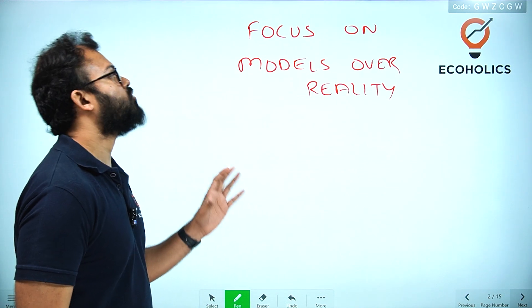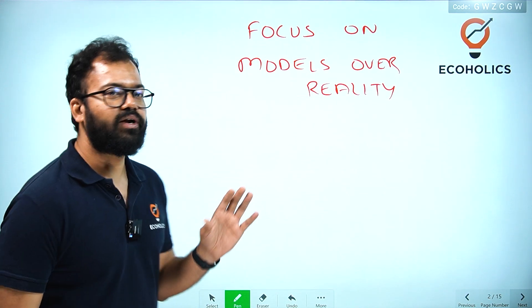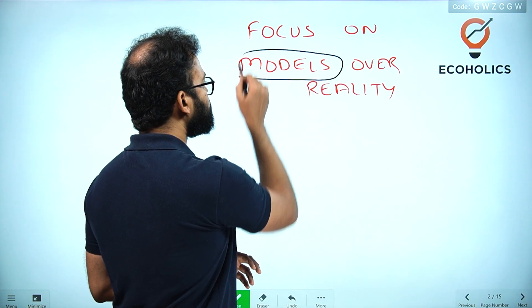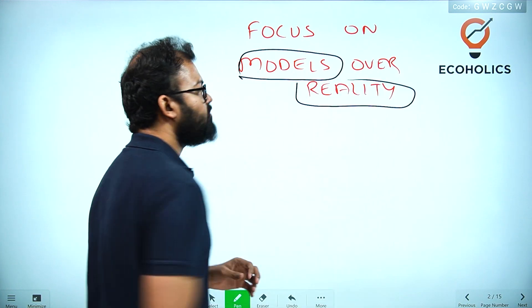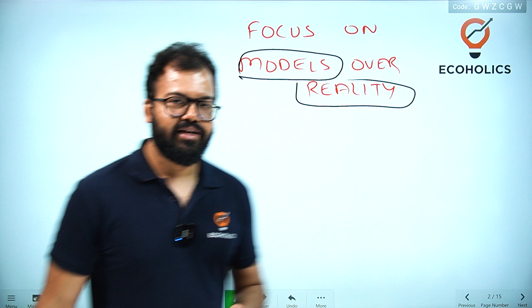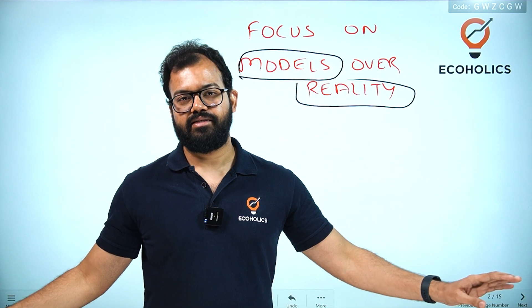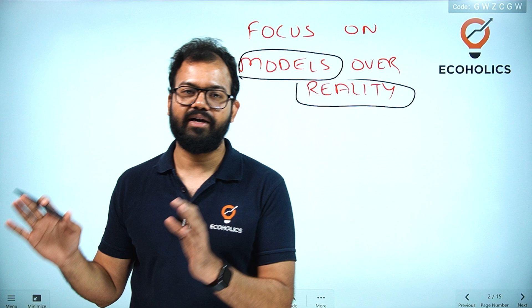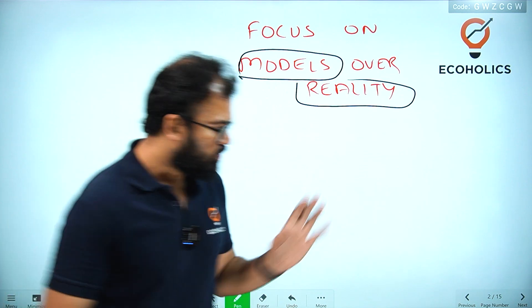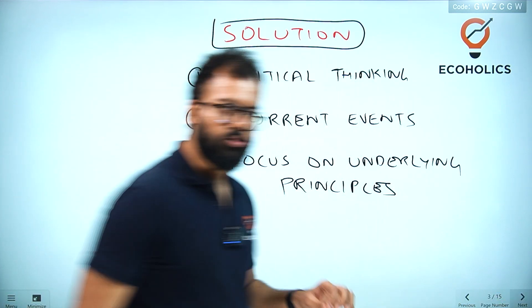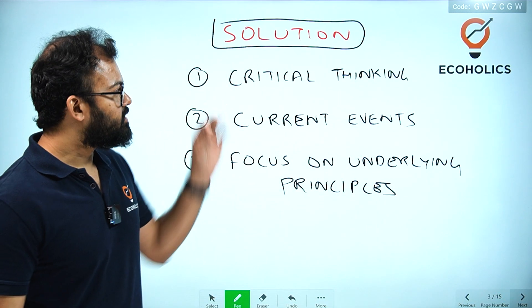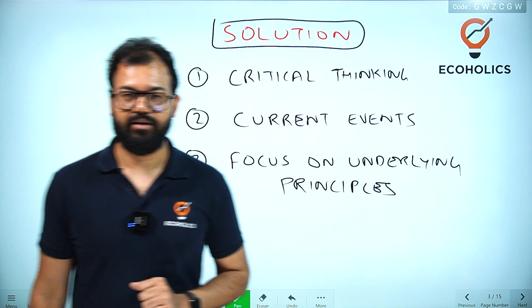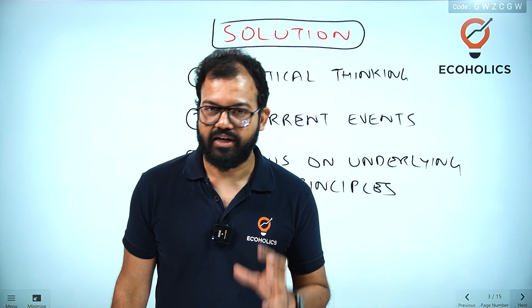This is the fifth problem: focusing on models over reality. The two keywords here are 'models' versus 'reality.' You have to understand that in every circumstance, with every model, you have to correlate with real things. Now let's discuss the solutions. Solution number one is critical thinking — you have to question what the model actually provides.